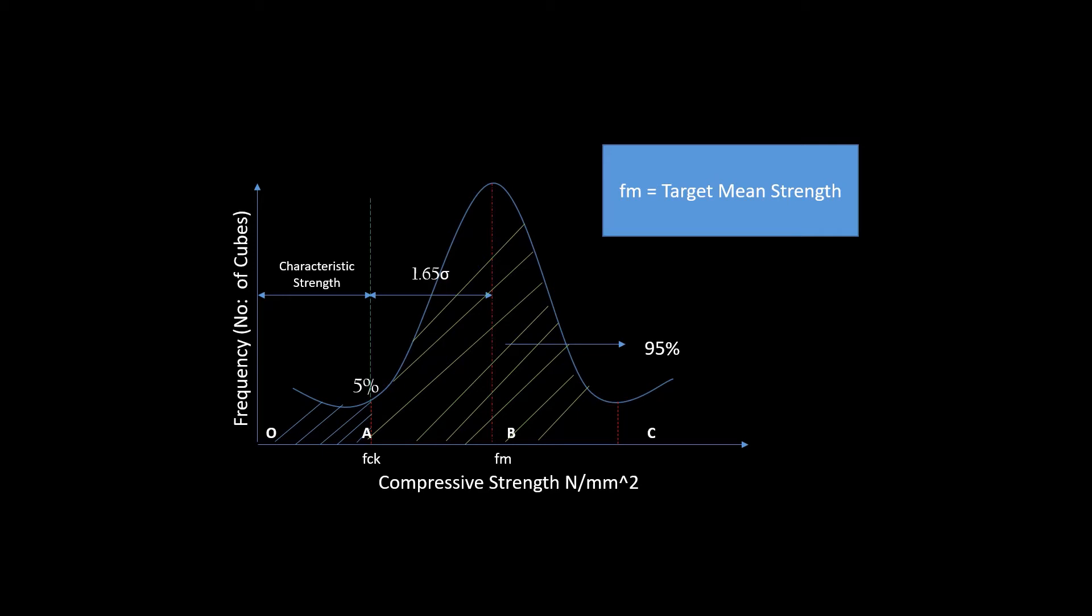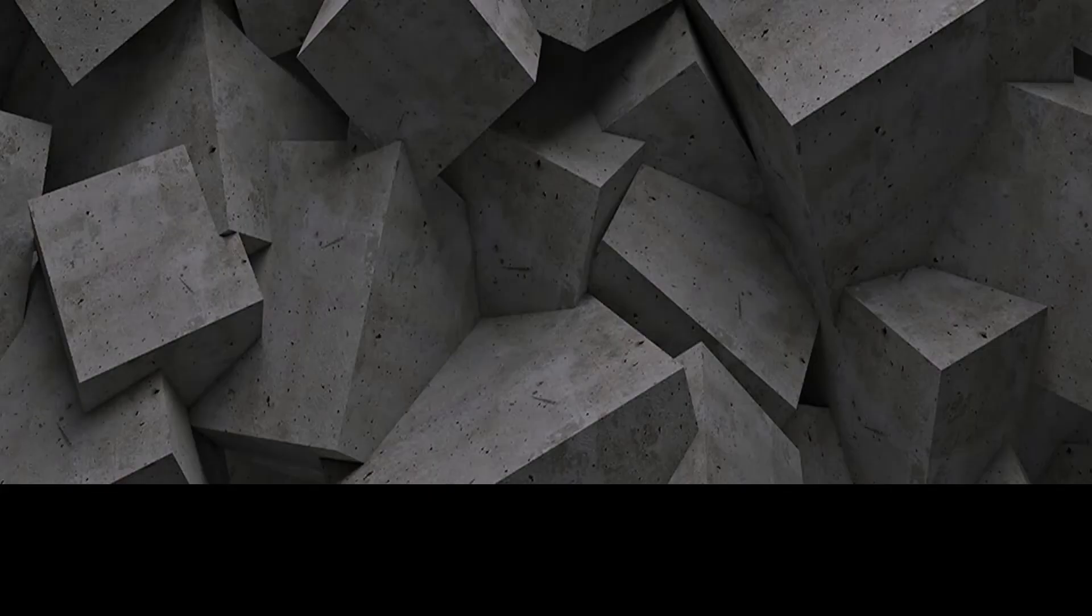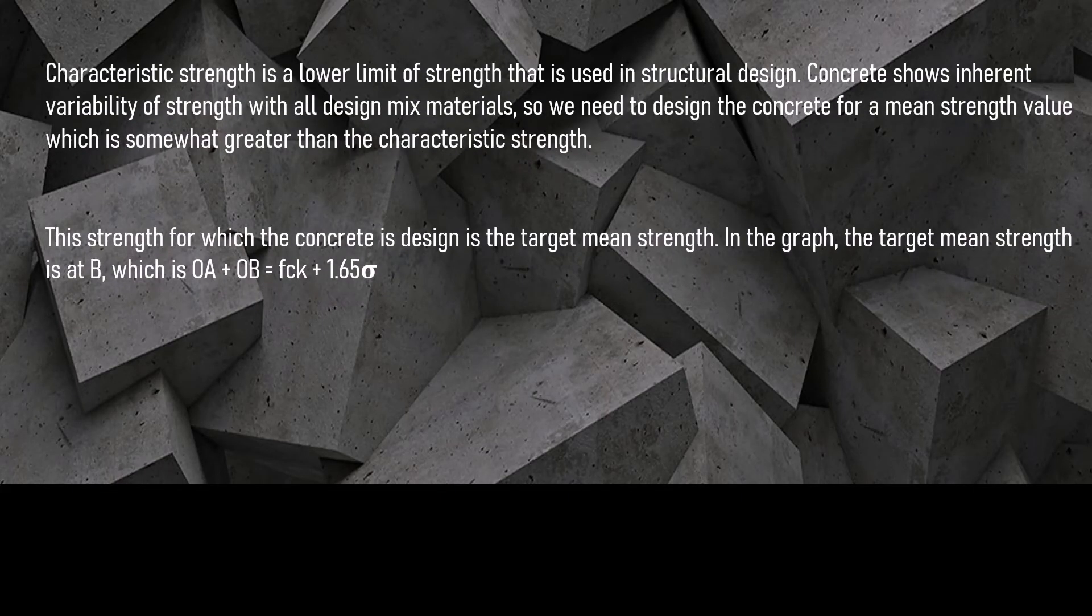Characteristic strength is a lower limit of strength that is used in structural design, i.e. Fck. Concrete shows inherent variability of strength with all the design mix material, so we need to design the concrete for a mean strength value which is somewhat greater than the characteristic strength.